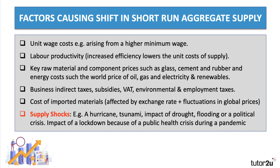We also have supply shocks, which can affect short-term supply. Supply shocks are unexpected events that disrupt short-term production — it could be a hurricane, a tsunami, extreme weather events, or a political crisis. More recently, we've seen an inward shift in short-term supply due to lockdowns and public health measures designed to control the pandemic.